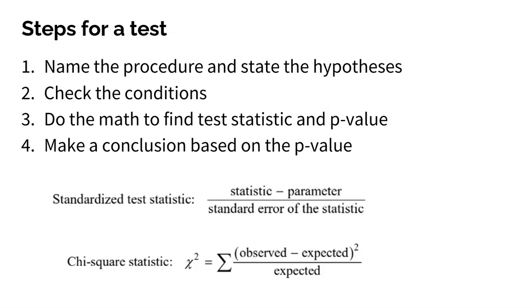For a significance test, we're also looking at four steps. Name the procedure and state your hypotheses, the null and the alternative. Check the conditions for the test to be conducted. Do the math to find your test statistic and your p-value, and then make a conclusion based on your p-value.